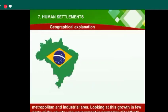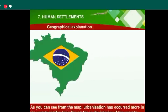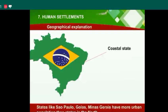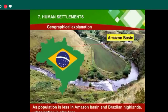Looking at this growth concentrated in two parts of the country, the government is promoting a 'Go West' policy which will reduce pressure on the few areas where population is concentrated and will reduce regional imbalance. As seen from the map, urbanization has occurred more in the coastal states than in the interior. States like São Paulo, Minas Gerais have more urban populations than states in the north, as population is less in the Amazon basin and Brazilian Highlands.